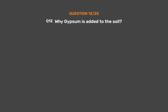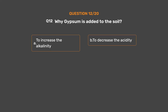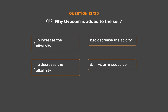Question number 12. Why is gypsum added to the soil? Option A: To increase the alkalinity. Option B: To decrease the acidity. Option C: To decrease the alkalinity. Option D: As an insecticide. The correct answer is Option A, to increase the alkalinity.